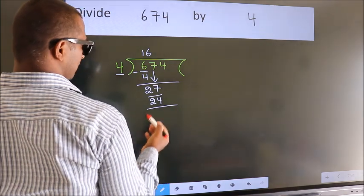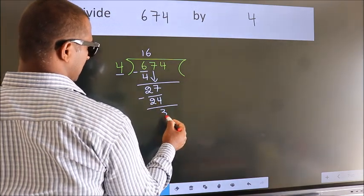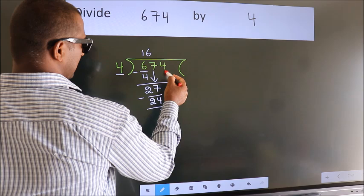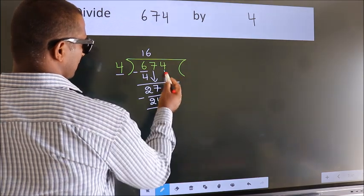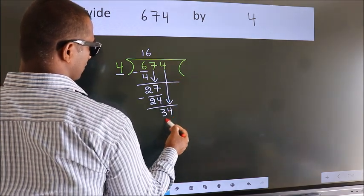Now we subtract and get 3. After this, bring down the beside number. So 4 down, making 34.